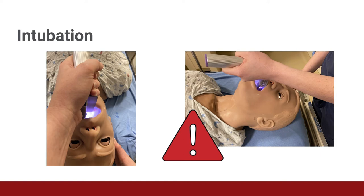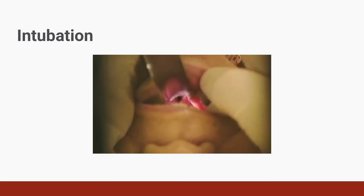A MAC blade tip will be placed in the vallecula. A Miller blade tip will be used to lift the epiglottis. Once the tip of the blade is positioned, exert force forward and away from you, lifting up without rocking back.